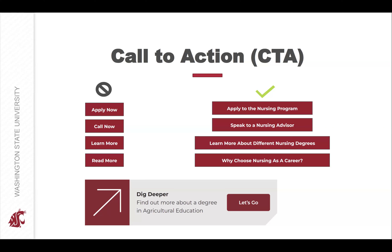I've included an example of a call to action from our degree finder pages where the button is generic, but the whole element works as a call to action — a description lets the reader know exactly what to expect when they click that button and gives them an action option. A clear call to action is much more helpful to the user and tells them exactly what to expect. They're more likely to click on it and stay engaged, and search engines will be more likely to rank your page higher since it's optimized to be useful.